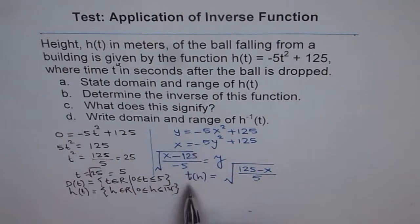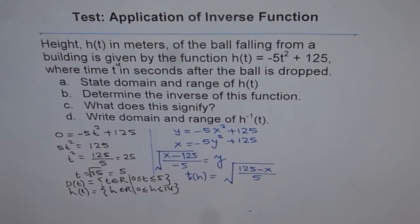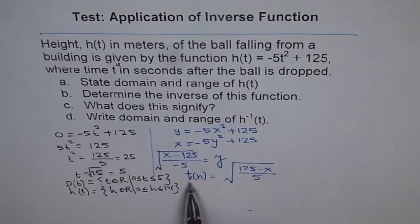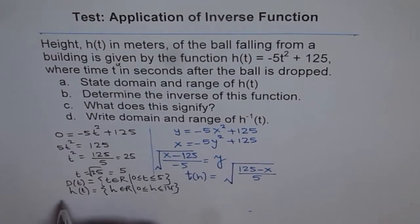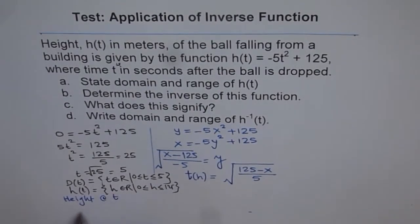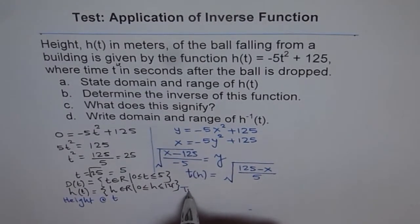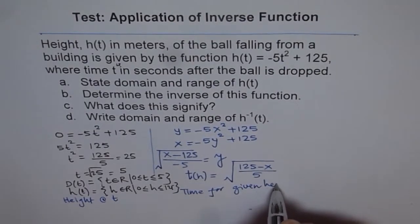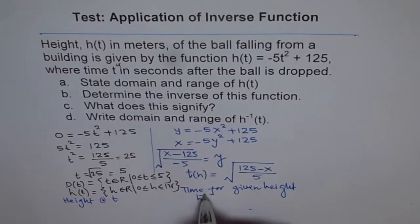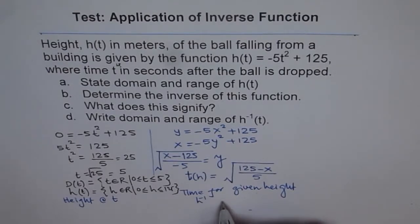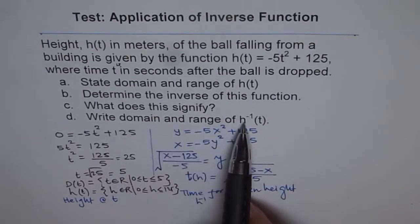So what does the inverse signify? The original function gives height at a given time. The inverse signifies time for a given height. So in h(t) we were finding height at a time; now the inverse gives us time for a given height. That is what h inverse signifies, and that is what is important here. Now write domain and range of h inverse.